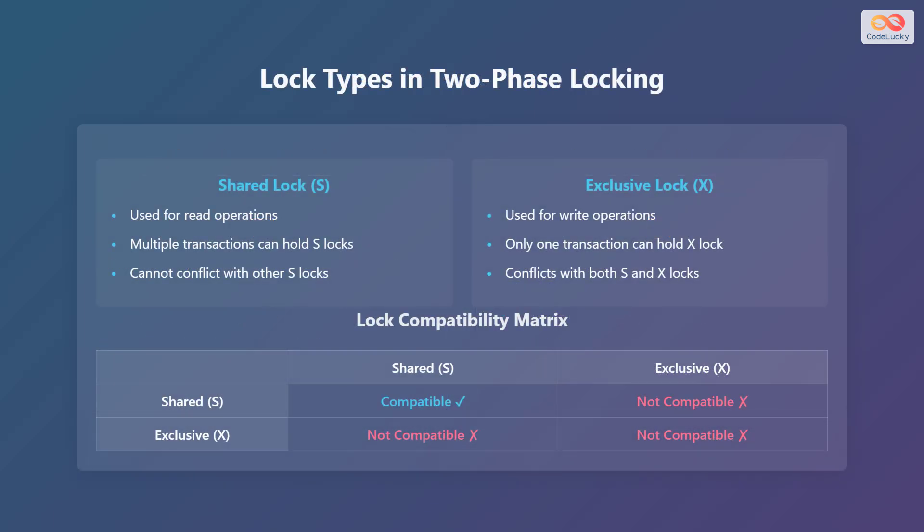In two-phase locking there are mainly two types of locks: shared locks and exclusive locks. Shared locks, denoted as S, are used for read operations. Multiple transactions can hold shared locks simultaneously, and they do not conflict with other shared locks. Exclusive locks, denoted as X, are used for write operations. Only one transaction can hold an exclusive lock at a time, and it conflicts with both shared and exclusive locks.